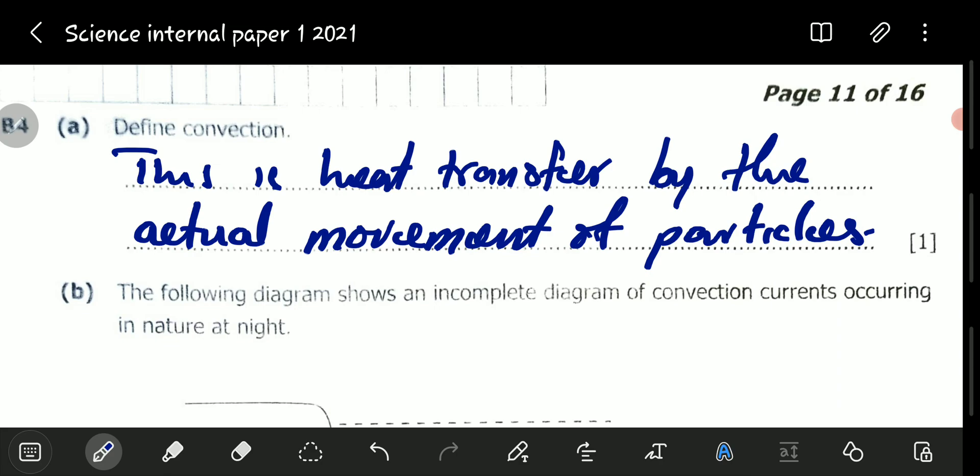In convection, particles themselves need to move, and as these particles move, they also move heat. The kind of transport that is carrying this heat is actually moving, like a bus ferrying people from one town to the other. This can only be possible in liquids and in gases.